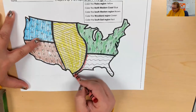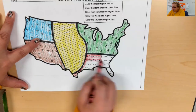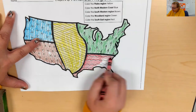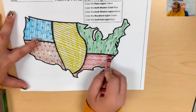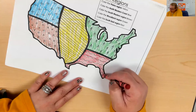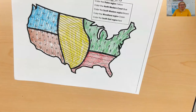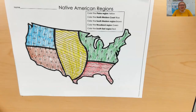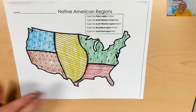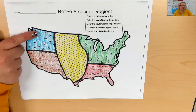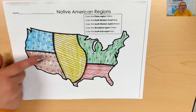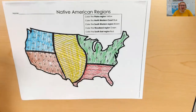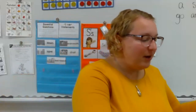The reason these regions are important is because different tribes lived in different regions. You might find out that you have some Native American ancestors, and you could find out which region of the United States they lived in. So the Native American regions are: the Northwestern Coast region, the Southwestern region, the Plains region, the Woodland region, and the Southeast region — just some fun information about where Native Americans lived.